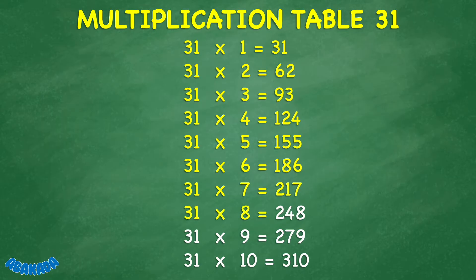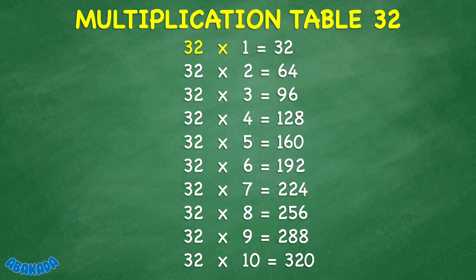31 times 8 equals 248. 31 times 9 equals 279. 31 times 10 equals 310. 32 times 1 equals 32. 32 times 2 equals 64. 32 times 3 equals 96.